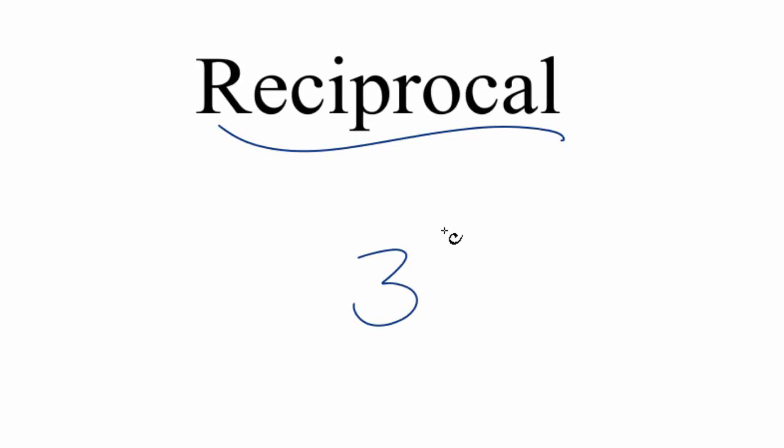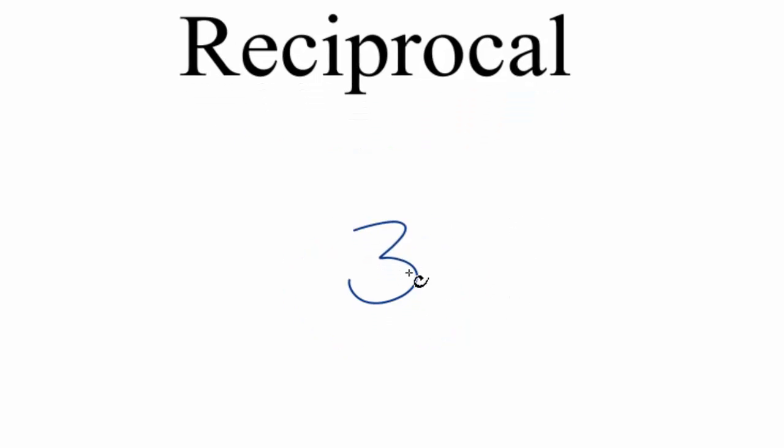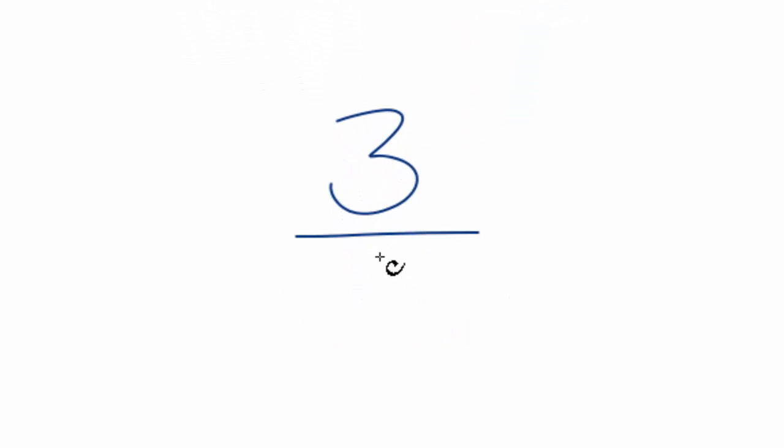All right, let's find the reciprocal for 3. And here's how you do it. We can think of 3 as just 3 over 1. It's still 3. 3 divided by 1 is 3.